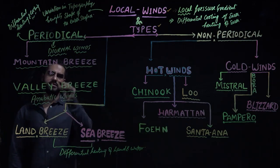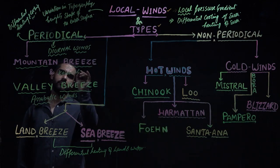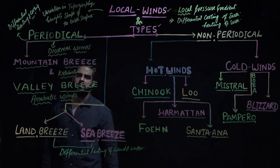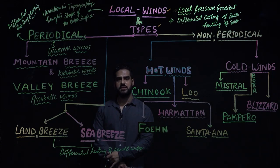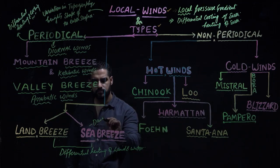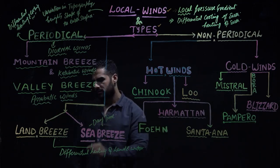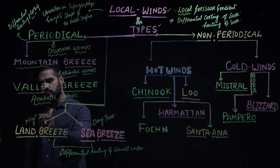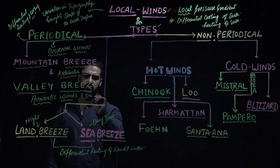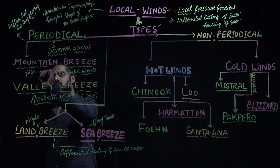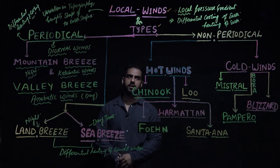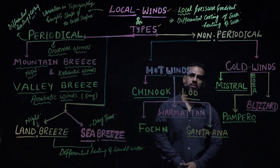Mountain breeze is also called catabatic winds. So, these winds are called diurnal winds. During daytime there is sea breeze; at night there is land breeze. Similarly, during daytime there is valley breeze and at night there is mountain breeze. Thus they are called diurnal. The second set of local winds is non-periodical winds.